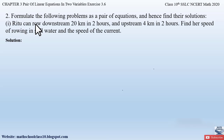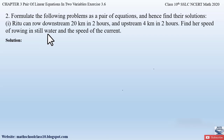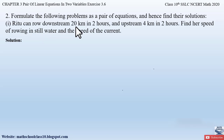Question number 2 from exercise 3.6 says: formulate the following problems as a pair of equations and hence find the solution. The first part says: Ritu can row downstream 20 kilometers in two hours and upstream 4 kilometers in two hours. Find her speed of rowing in still water and the speed of the current.